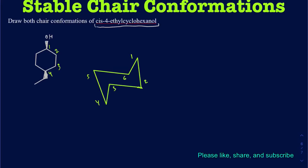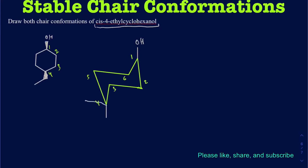On carbon 1 I have an OH group that's coming out of the page, so I want to draw the OH pointed up. The ethyl group on carbon number 4 is also coming out of the page. So the two positions on carbon 4 — one is going to be axial and the other equatorial. The ethyl needs to be pointed up because it's coming out of the page, so I put it on the equatorial position, which is pointed up, while the axial here is pointed down.